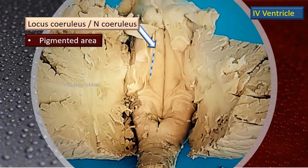At the cranial end of the sulcus limitans, there is a pigmented, melanin-rich area called the locus ceruleus. It contains the nucleus of the same name. Due to its melanin pigmentation, it shows a bluish-gray appearance in a fresh brain section. This bluish tinge is very well seen in this pigmented area.